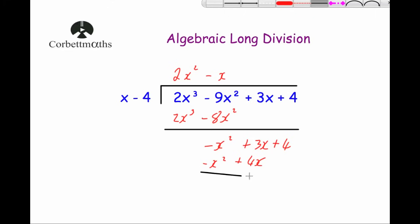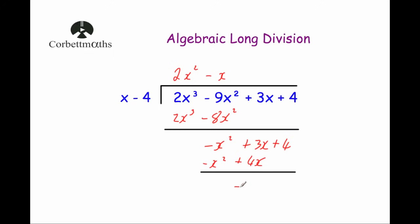Subtract again: minus x squared subtract minus x squared is zero. 3x subtract 4x is minus x, and 4 take away nothing is plus 4. Now divide: minus x divided by x is minus 1. Multiply: minus 1 times x is minus x, and minus 1 times minus 4 is plus 4. Subtracting gives zero — so no remainder, we're finished. The answer is 2x squared minus x minus 1.